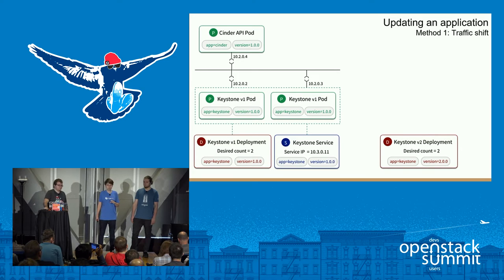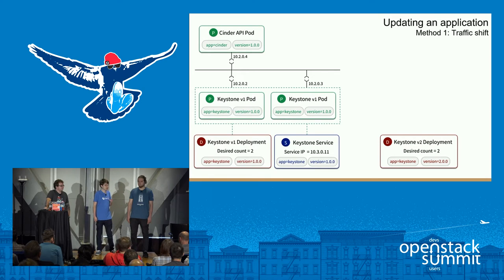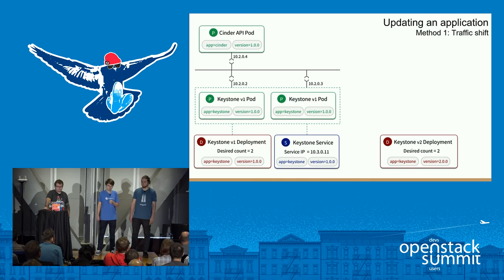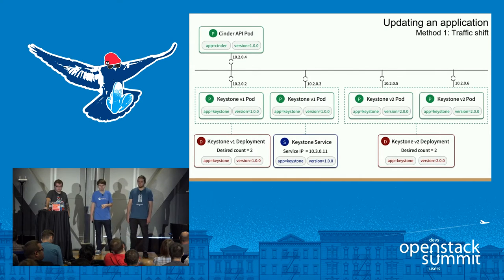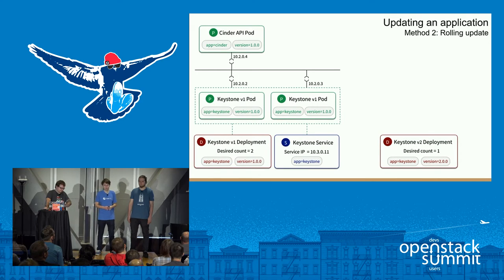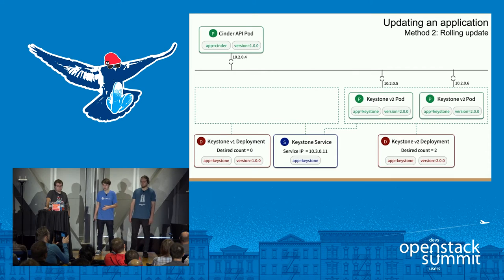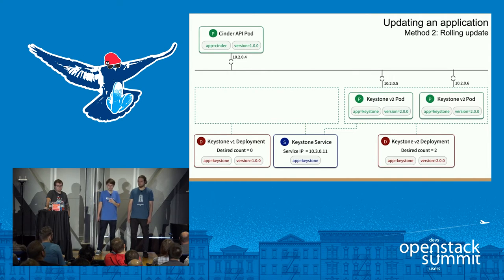Kubernetes can also perform updates. One method is traffic-shifting: deploy a new Keystone V2 deployment, Kubernetes creates the containers, then we change the service label to serve V2 pods instead of V1. More interestingly, rolling updates automatically reduce V1 containers while starting V2 containers, eventually running only the new containers. Kubernetes has many more advanced features: pet sets for stateful clustered applications like Galera, node affinity and anti-affinity, init containers, scheduled jobs, dynamic persistent volume provisioning, and Rocket support.